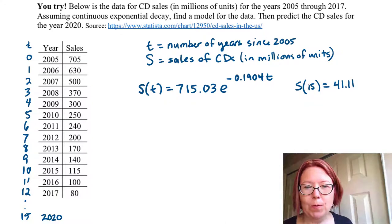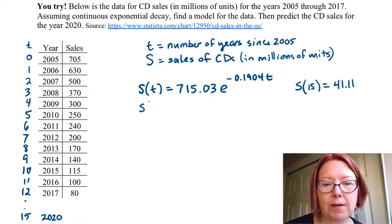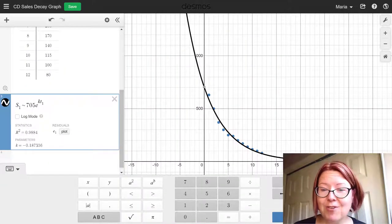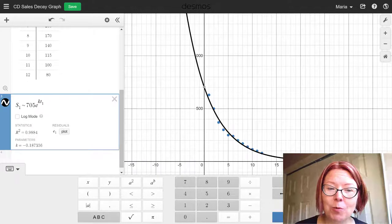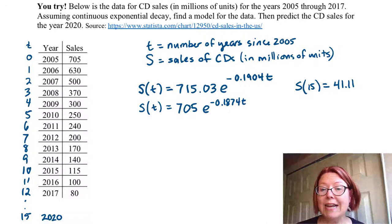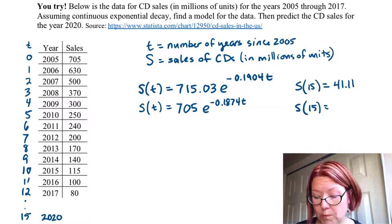Let's play with some options. What happens if we force the data through the first data point — in other words, make a model S(t) that forces the initial value to be 705? Now we just have a k value coming from the model. It still looks like a pretty good model, and the k value is negative 0.1874. So now we have the model 705·e^(−0.1874t), and S(15) gives us sales at the year 2020 of 40.54 million.